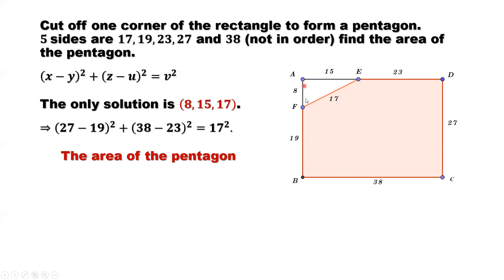So that's 38 times 27, the area of this rectangle, minus one half times 8 times 15. Simplify. We have 966. This is the answer.